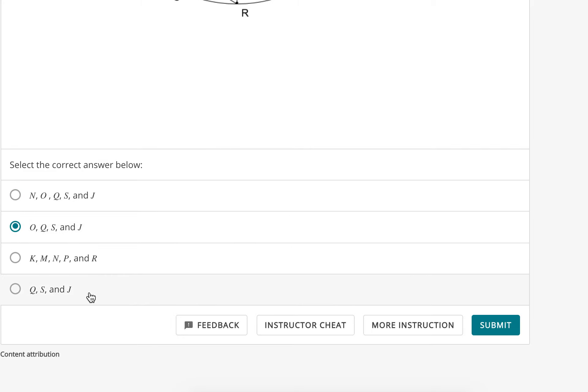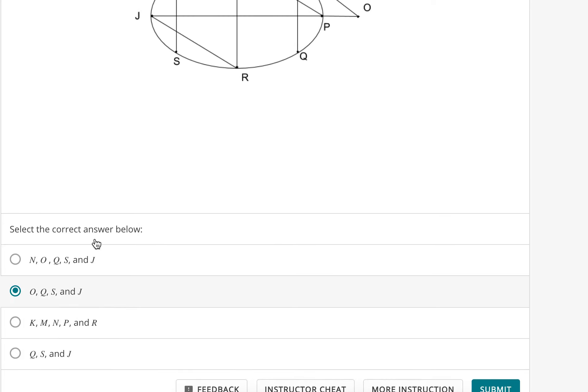So we got these last two because we said J, S, and Q are all on that list. We just said O is not adjacent, so we got to pick that one as well. I think we got them all.